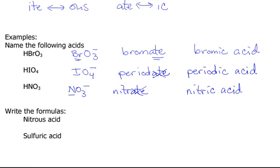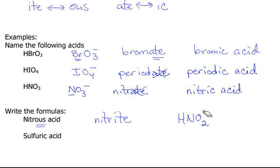What about nitrous acid? '-ous' goes with nitrite. Nitrite is NO₂⁻, and it only has a minus 1 charge, so it only needs one H to negate that one minus — giving HNO₂. And for sulfuric acid: '-ic' goes with sulfate, SO₄²⁻, so I need two H's to give H₂SO₄.